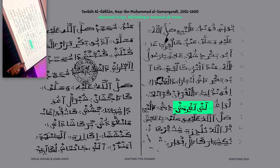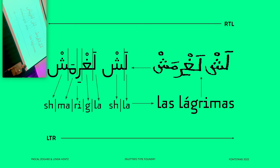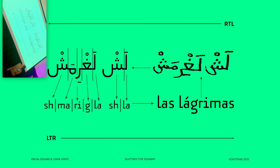I highlighted one word, which reads in Arabic — from right to left — 'Lash Lagrimas'. If you take the word and take phonetically every phoneme, and switch it from right to left to left to right, it reads 'las lágrimas', which means in Spanish 'the tears' — al-dumu' in Arabic.